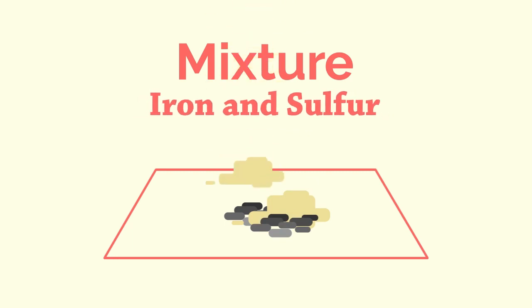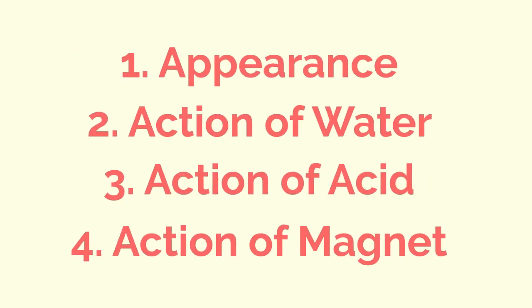We could add a bit more sulfur and mix. It's still a mixture. As said earlier, the components of a mixture, in this case iron and sulfur, are not in fixed proportions. So let's now perform those same four tests on the mixture of iron and sulfur.